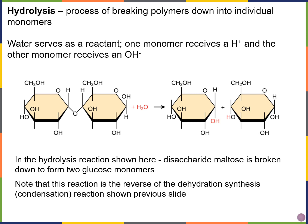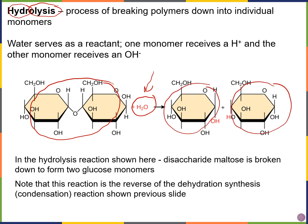The reverse can happen as well. The reverse of dehydration synthesis is hydrolysis. You're adding water into the reaction to break the polymer into its subunits, the monomers. So this time, water is actually a reactant instead of a product. In this reaction, we're starting with a disaccharide — two sugars. The sugar shown here happens to be something called maltose, and we're breaking it down into two monomers, which happen to be two glucose molecules. This is the opposite of dehydration synthesis, also known as condensation, and we call it hydrolysis.